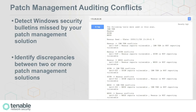This is what it will look like. You can detect missing Windows security bulletins that have been missed by your patch management solution. You can also identify discrepancies between your patch management systems or whatever Nessus finds when it's logged into the host.